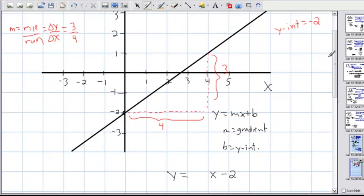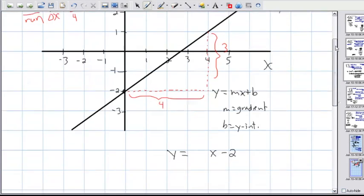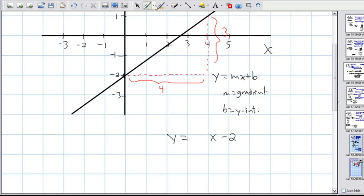Now if I know that my slope or my m value is 3 fourths and I know that my b value is minus 2, I can now easily write my equation out because I just put in the 3 fourths here. That's a positive because it's going up. If it was going down, a negative slope, it would have been a negative in front of it. So this is my equation.